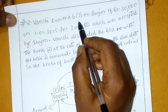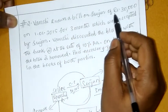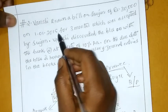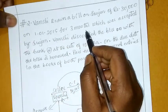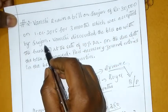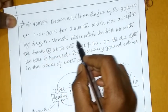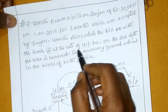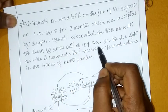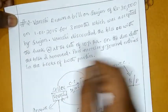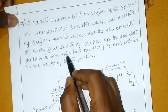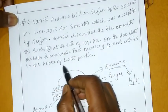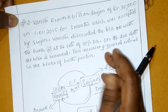Vamshi draws a bill on Shrujan of Rs. 30,000 on 1st January 2015 for 3 months, which was accepted by Shrujan. Vamshi discounted the bill with the bank at the rate of 10% per annum. On the due date, the bill is honoured. Pass the necessary journal entries in the books of both parties.